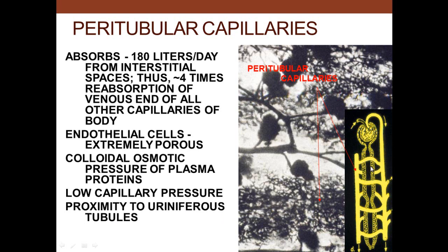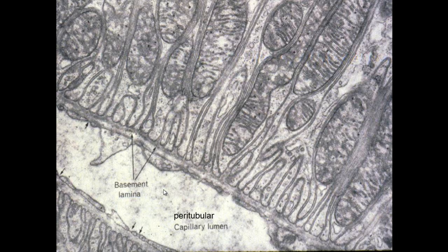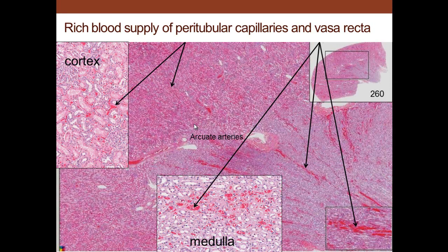The peritubular capillaries are very close to the nephron for maximum absorption of these 180 liters of fluid per day. The peritubular capillaries have fenestrated endothelium, visible right there below the enfolded proximal tubules. In the cortex we have peritubular capillaries, and in contrast in the medulla we have the vasa recta going down through there.